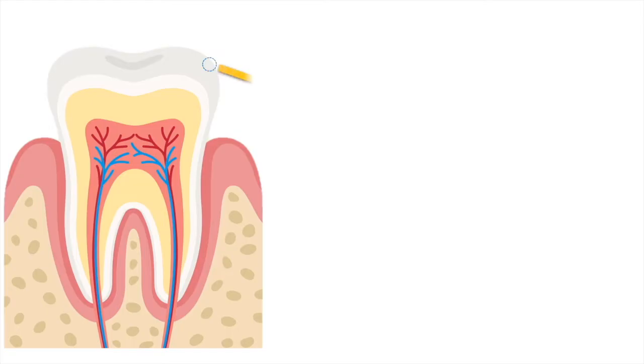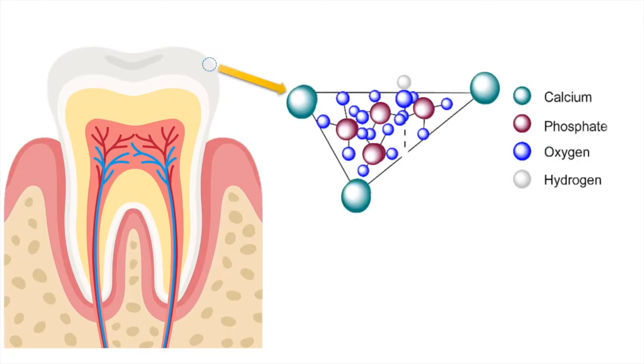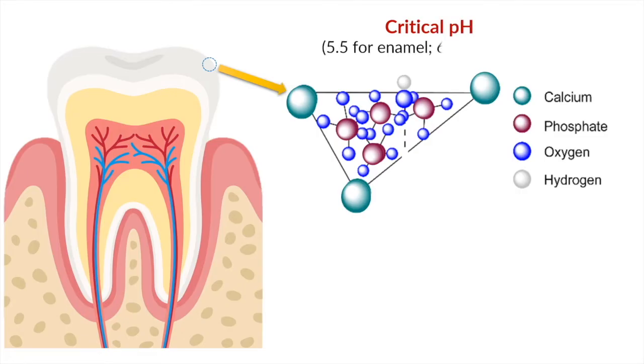In conditions where the pH of the saliva decreases, that is it becomes more acidic, and at a critical pH of 5.5 for enamel and 6.2 for dentin. The critical pH is slightly higher for dentin because it has less inorganic content and slightly lower for enamel because it has more inorganic content.